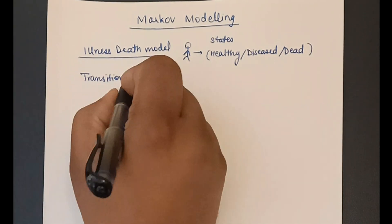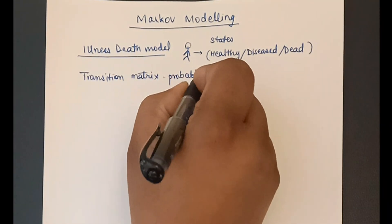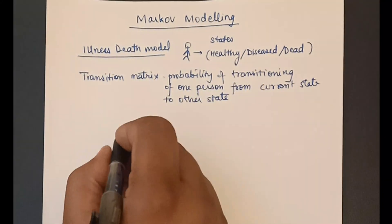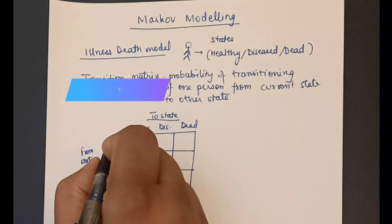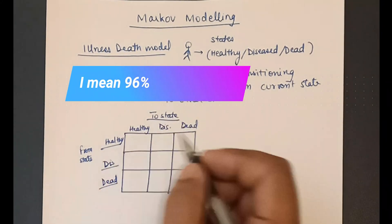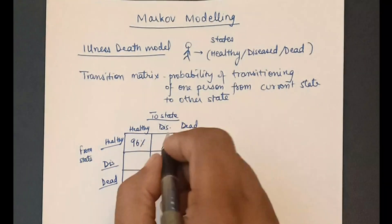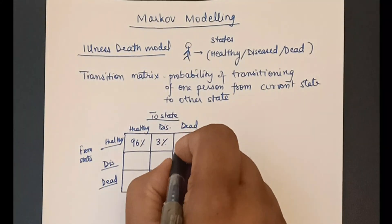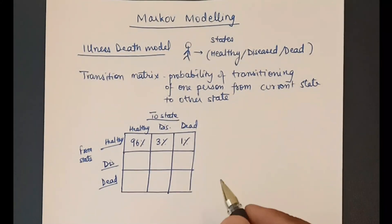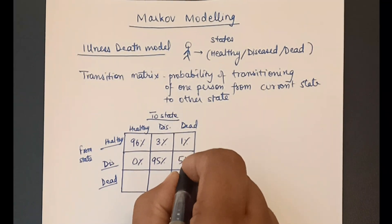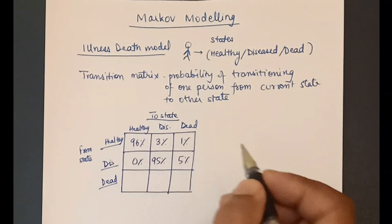Now, we need something called the transition matrix. It is the probability that a person in one state would go to the other state after one cycle. For example, there is 95% probability that a healthy person will remain healthy after one cycle, 3% chance that he will be diseased, and 1% chance that he will cease to exist. If a person is diseased, let's say HIV, he has 0% chance of being healthy, 95% chance he stays diseased, and 5% chance he or she faces mortality in one cycle.